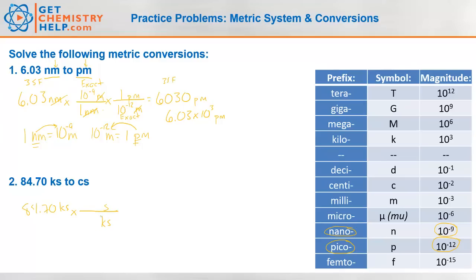What does kilo mean? Let's find kilo over here — it means 10 to the 3rd. So is 1 kilosecond 10 to the 3rd seconds? A kilosecond must be 10 to the 3rd seconds. Wherever the prefix is, the exponent has to be on the opposite side. So 1 kilosecond is 10 to the 3rd seconds.